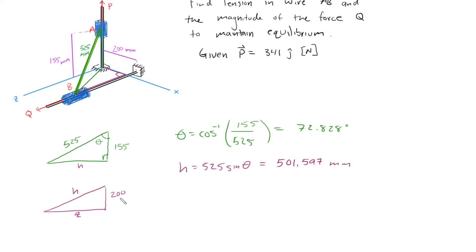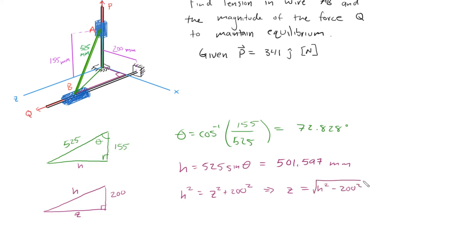Now we use the Pythagorean theorem on the second triangle to find Z. We have H squared equals Z squared plus 200 squared, so Z equals the square root of H squared minus 200 squared, which gives Z equals 460 mm.